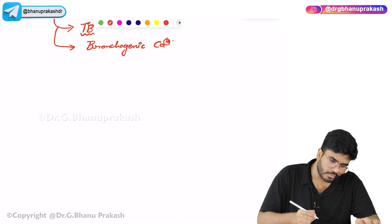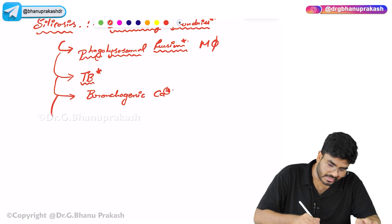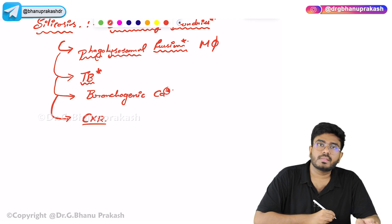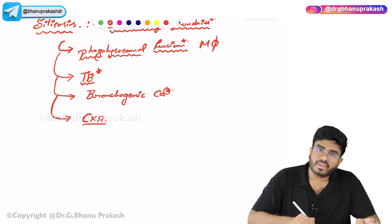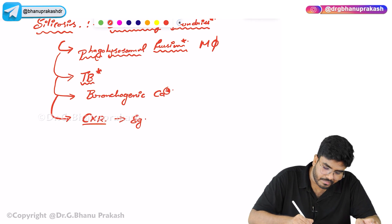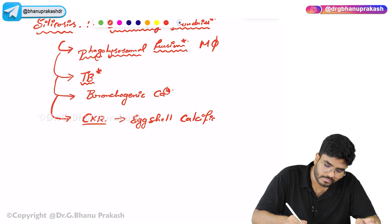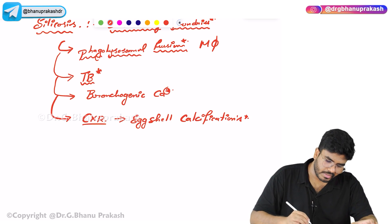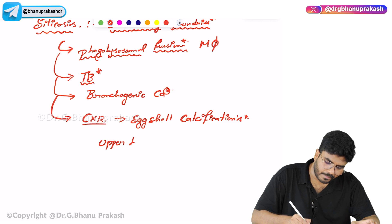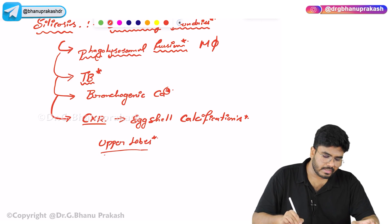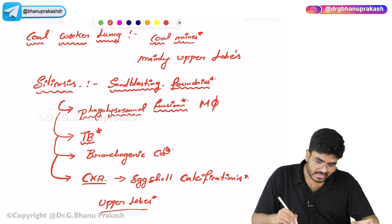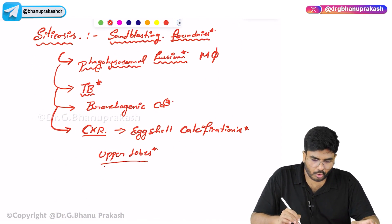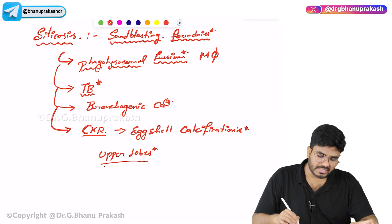Before going to asbestosis — on chest X-ray in silicosis, mainly the upper lobes are affected and you will see eggshell calcifications. So in silicosis, upper lobes are affected with eggshell calcifications. Both coal worker's lung (anthracosis) and silicosis affect the upper lobes; eggshell calcifications are seen specifically with silicosis.